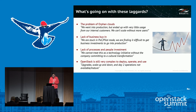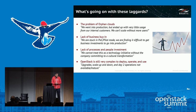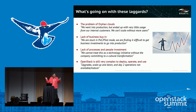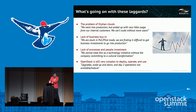The third and most important issue is: 'We cannot treat this as a technology initiative without the company committing to a transformation.' There's no top-down initiative — no CIO saying go do this. Instead it's bottom-up: someone downloads OpenStack, plays with it a bit, gets a couple of users, and that's it. Nobody's getting any benefits. OpenStack is still very complex; some of you are new to it. Over the last six years it has come a long way, but operations — upgrades, scaling up and down, day-two lifecycle management — are still not completely mature.